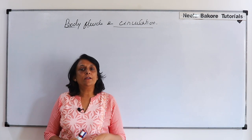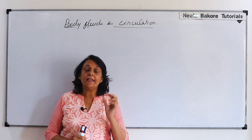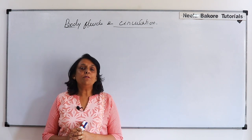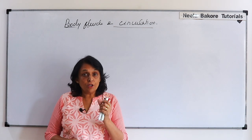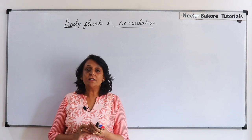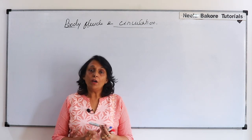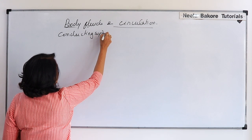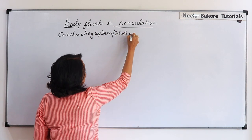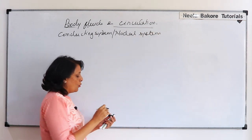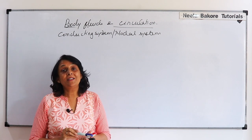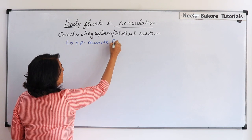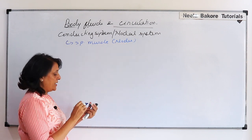Now for the cardiac cycle, stimulus comes from a specialized muscle. We call it a node. So in our heart there is a nodal system which will conduct the stimulus. We can also call this the nodal system and conducting system. In this particular structure it is all specialized muscles, and this is why we call it the nodal system.